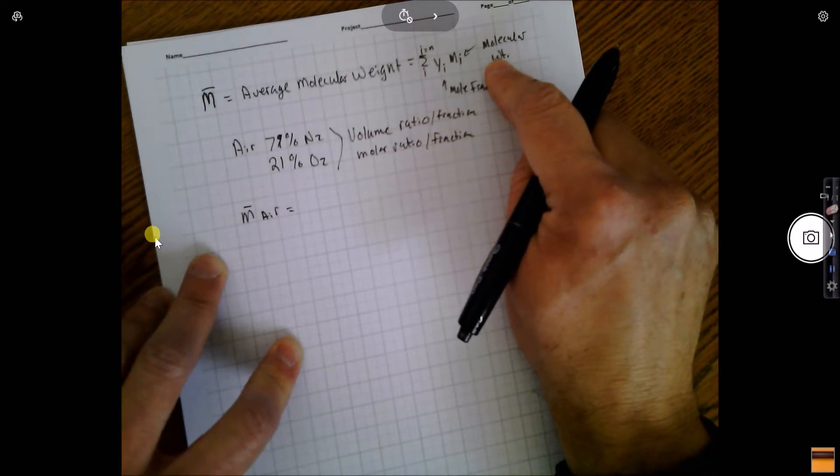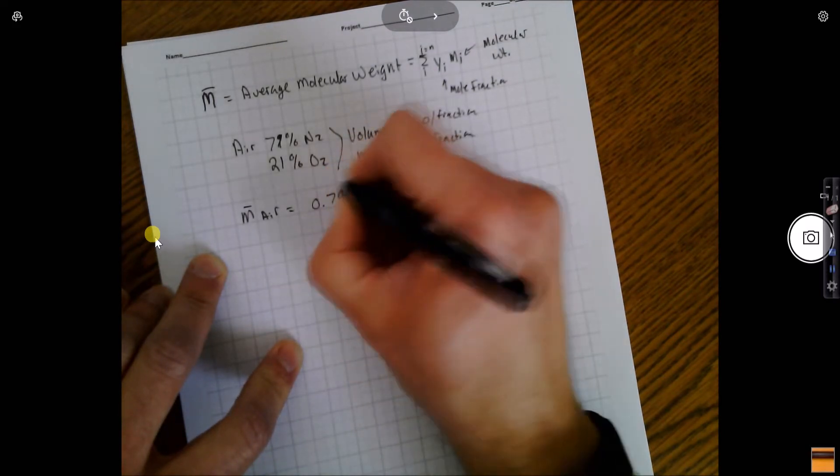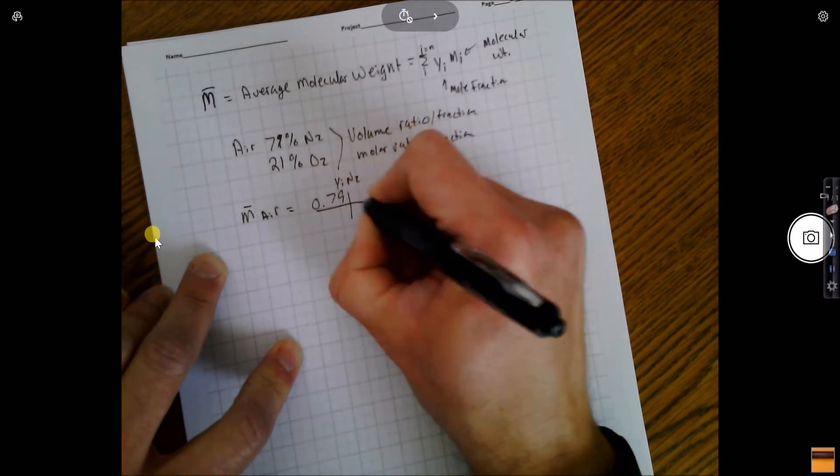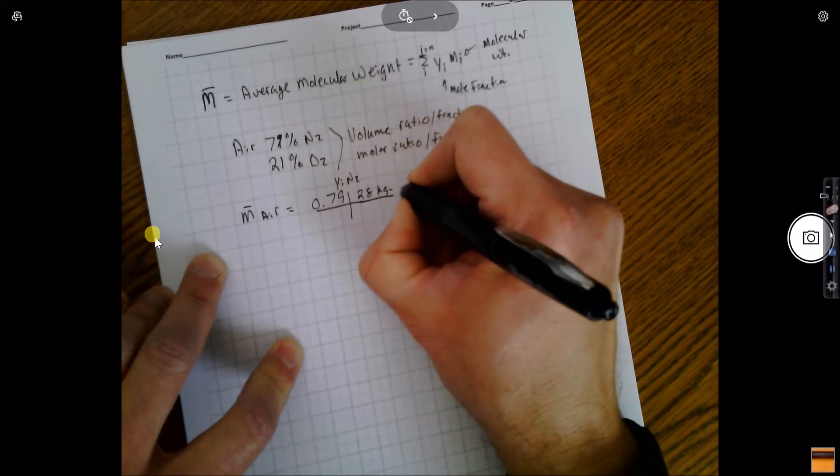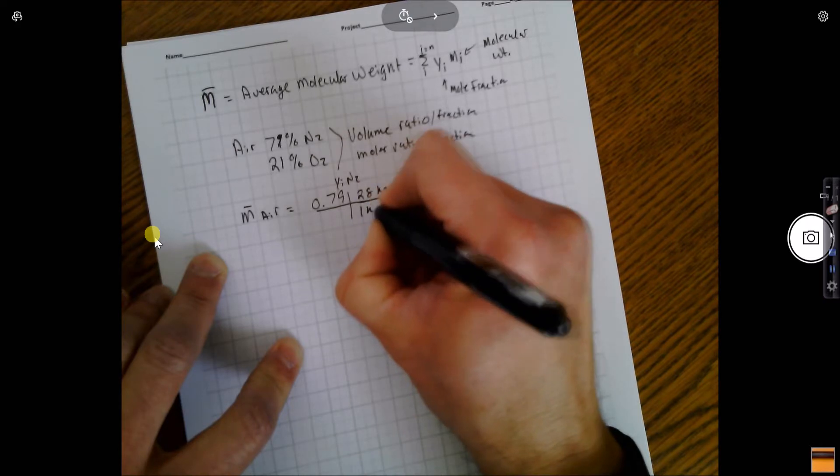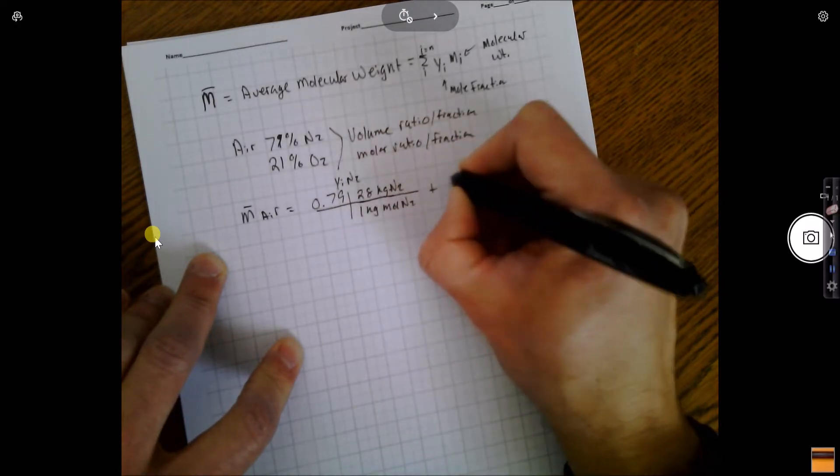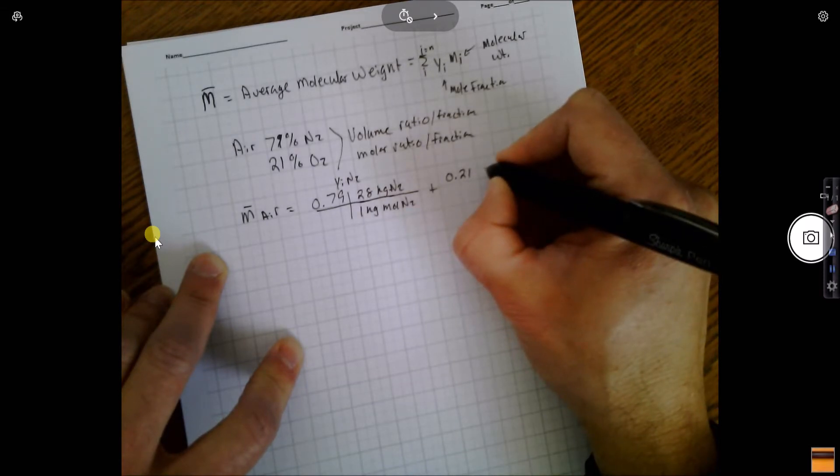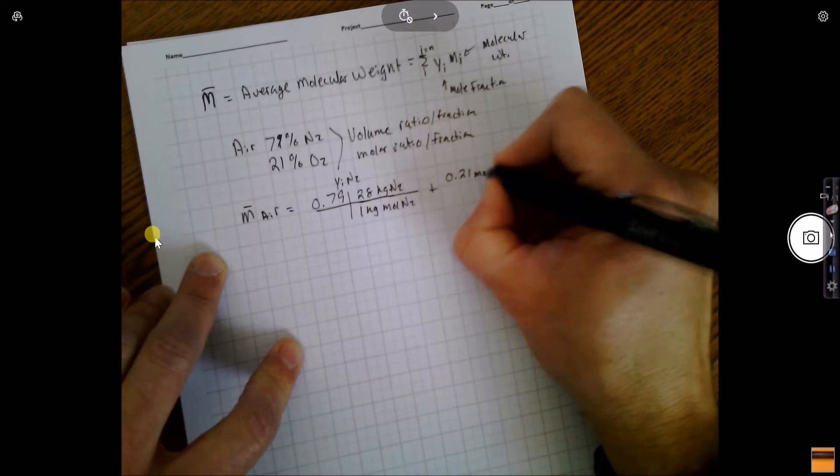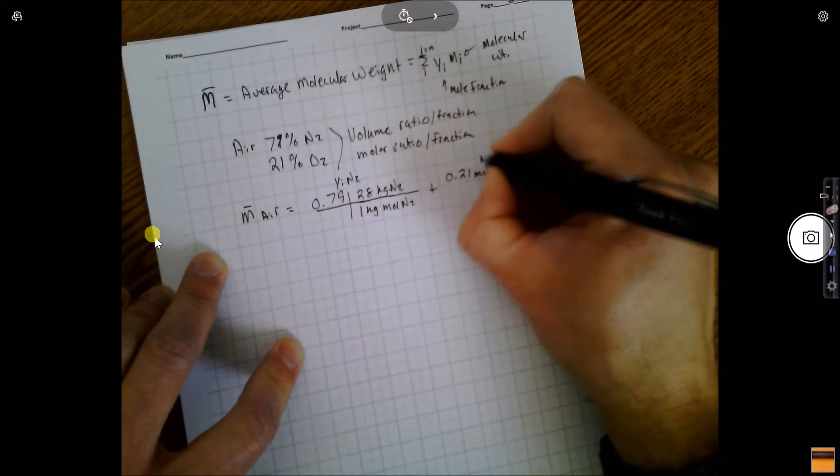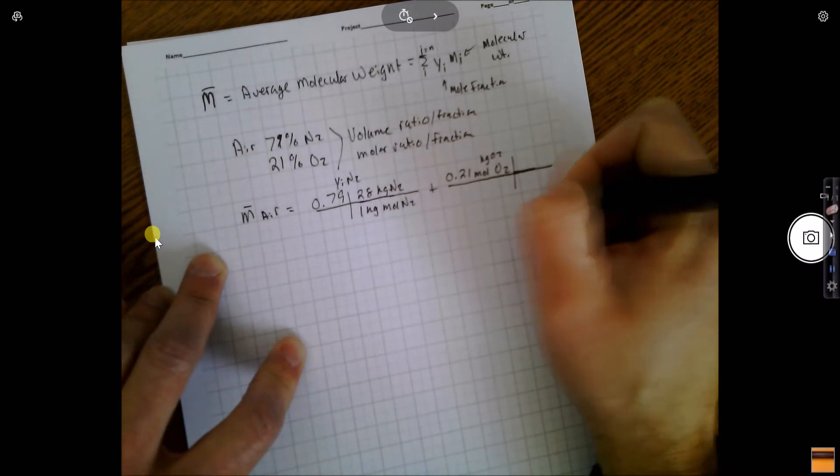To write that out, using kilogram moles: 0.79, which is the mole fraction of nitrogen, times the molecular weight of nitrogen. There are 28 kilograms in one kilogram mole of N2, plus 0.21 moles of O2.